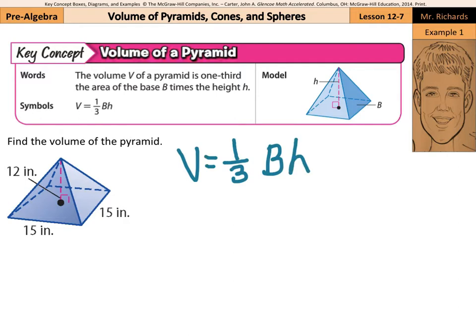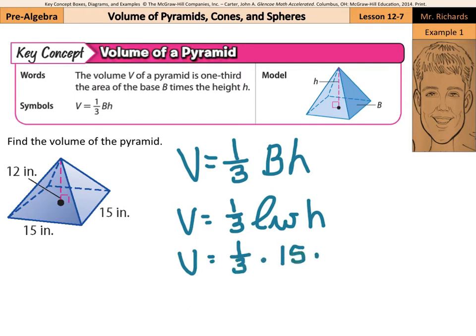In this case, our base is a rectangle, and so volume is going to equal one-third length times width times height. So volume is going to be one-third times 15 times 15, and the height here is 12. When I multiply these four numbers together, my product is 900 inches cubed.